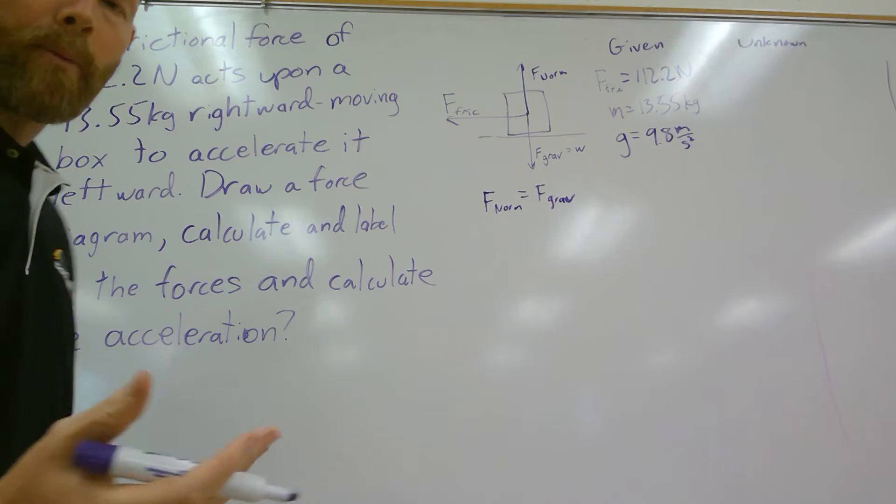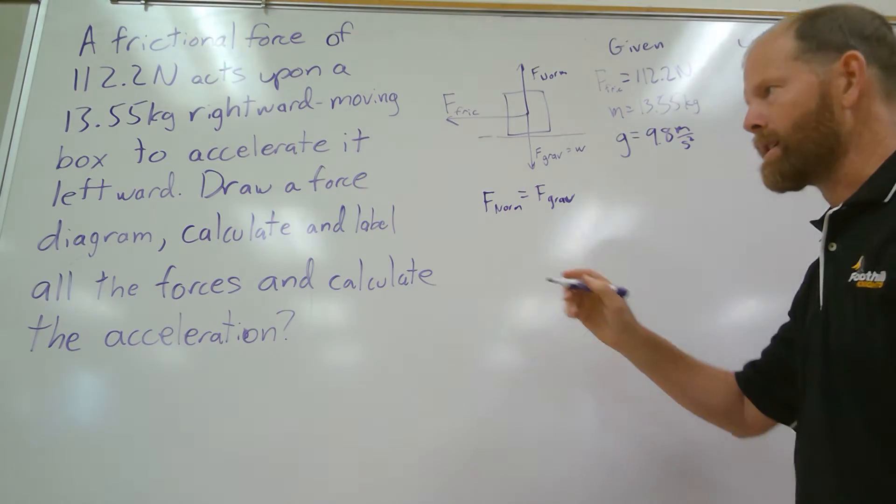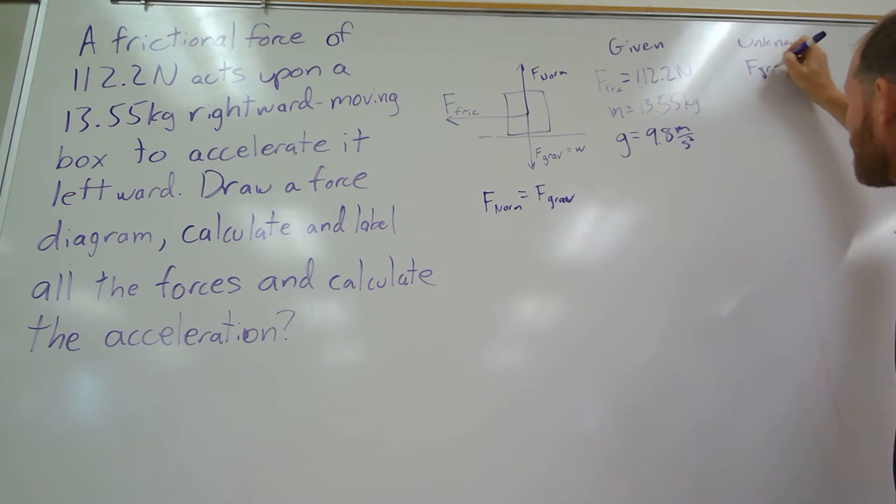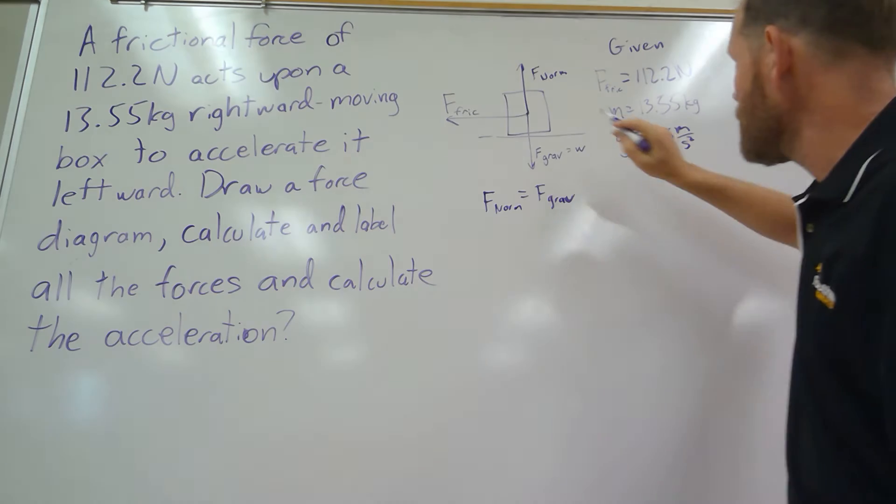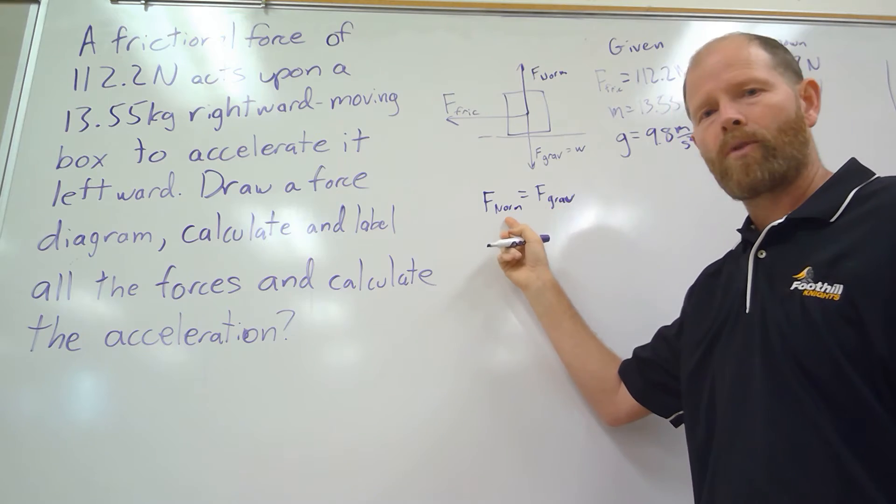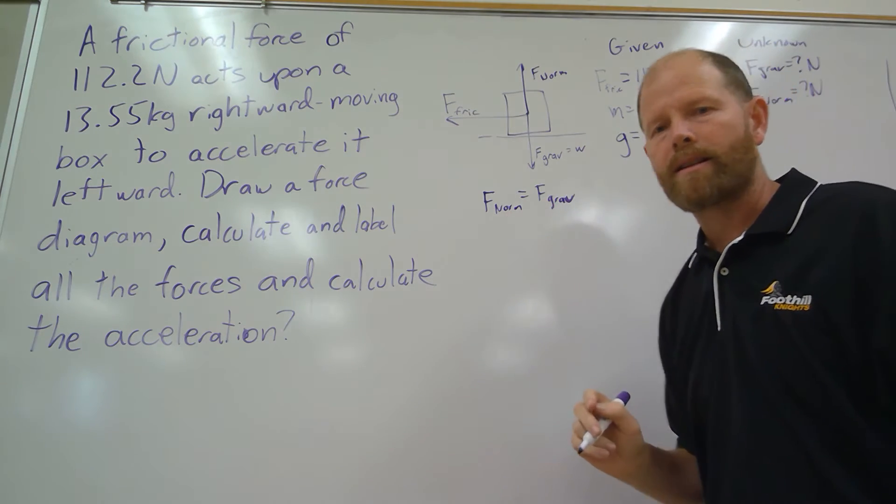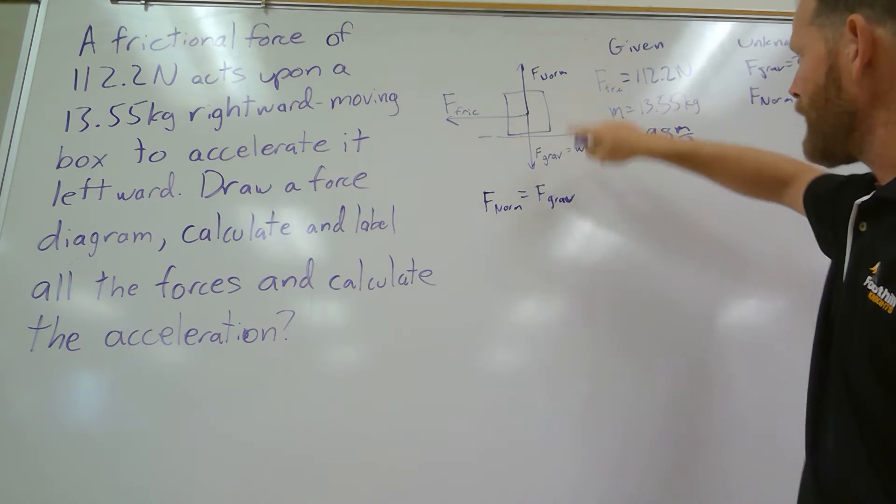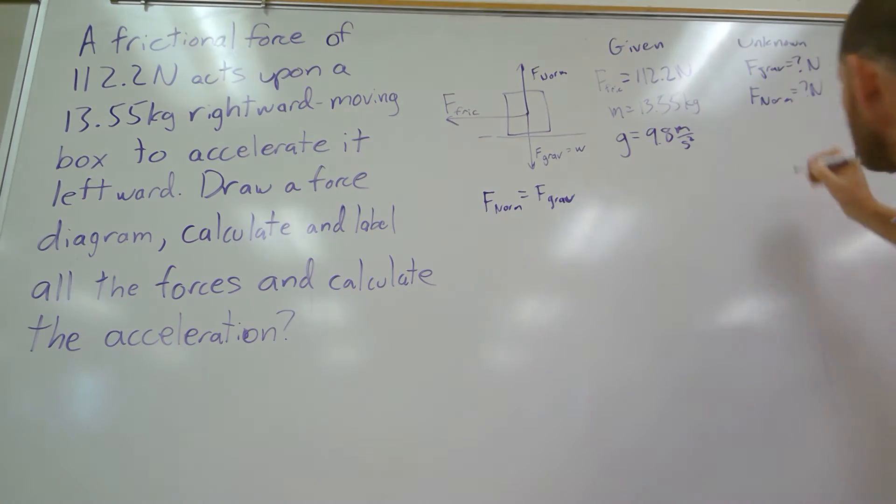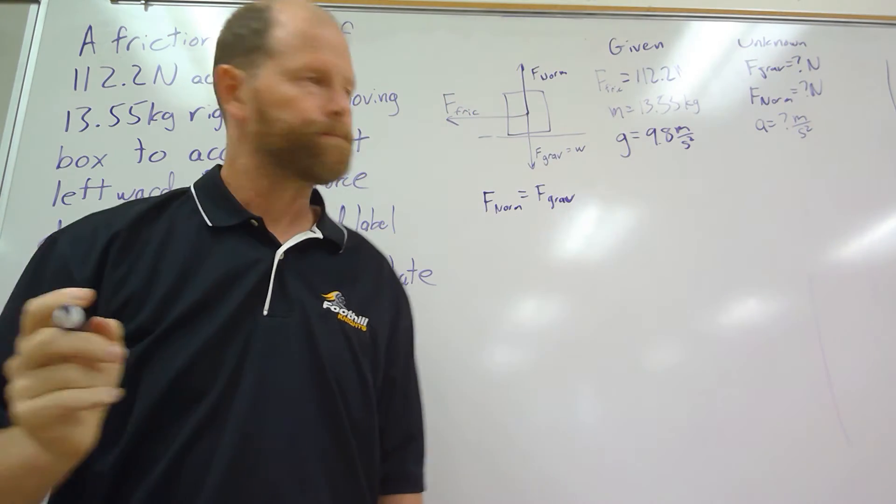Then we have a whole bunch of unknowns. We have to list any force because it says calculate and label all forces. So force of gravity is an unknown, and I'll label that as a question mark with the units that I'm anticipating, which are newtons. Then we see the normal force is an unknown. Of course, once we've found the force of gravity, it'll be fairly simple to find the normal force since they are equal. That gives us all our forces because we're given the force of friction. And then it says to calculate the acceleration, so acceleration is we would expect to be measured in meters per second squared.